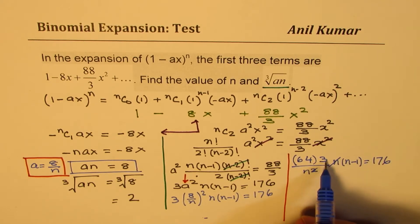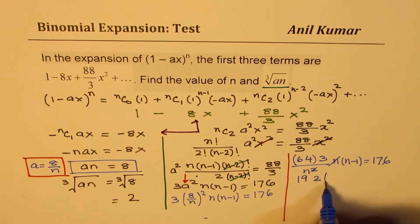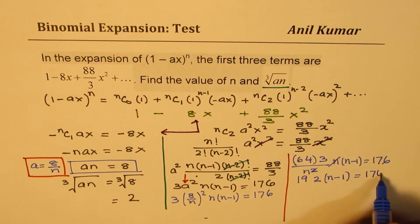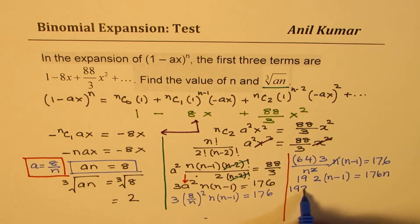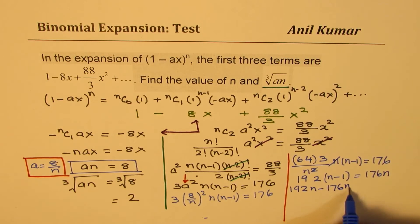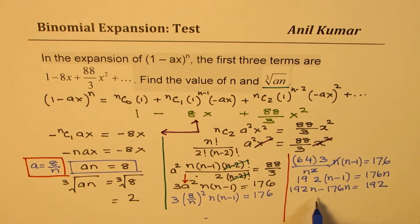So 192n - 176n, taking 192 on the other side. That gives you 16n. We get 16n = 192, so n = 192/16. We get the value of n equal to 12.